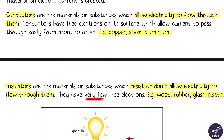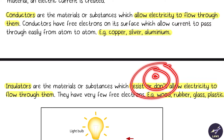Insulators are materials which resist or don't allow electricity to pass through them. They have very few free electrons. Basically, the outermost shell or valence shell is very stable, so the electrons are not ejected as readily as compared to conductors.